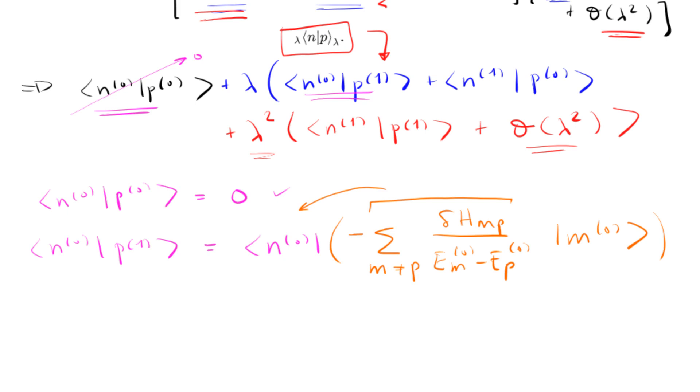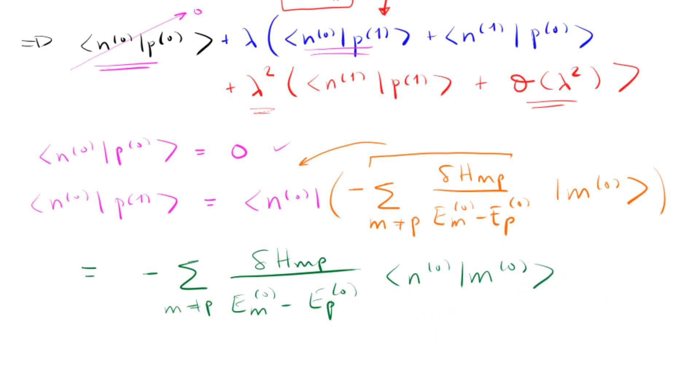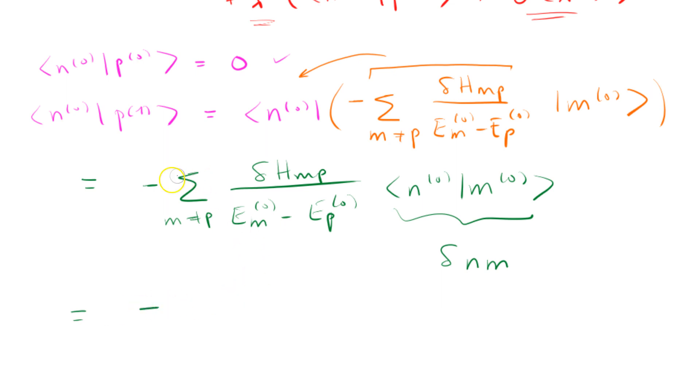So what are we left with? We're left with, this is equal to, well, let's pull the negative sum M does not equal to P. Then we have delta H, M, P, over E, M0 minus E, P0. And then N0, product of M0. Again, we are left with the situation, we got to evaluate this guy. This guy is going to be delta N, M, right? Because it's 0 when they're not equal to each other, and it's 1 when they are equal to each other.